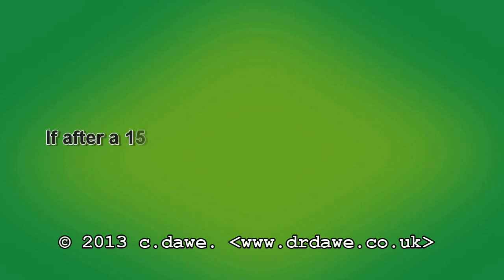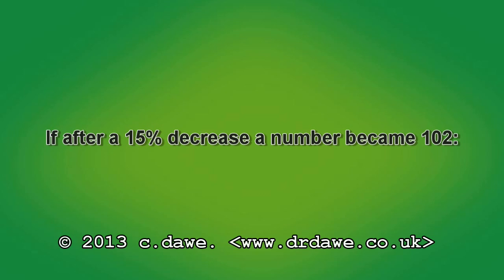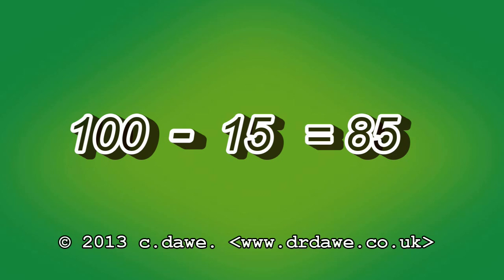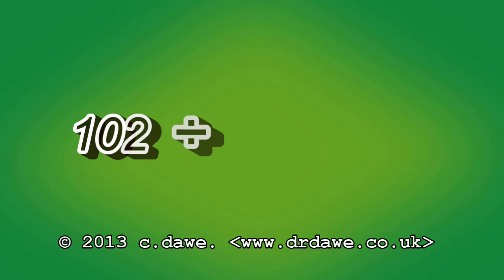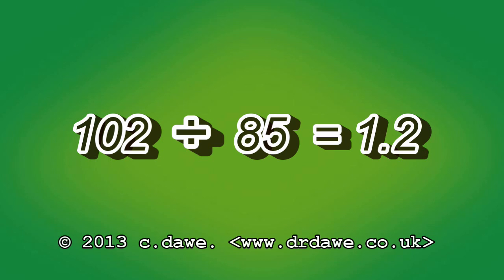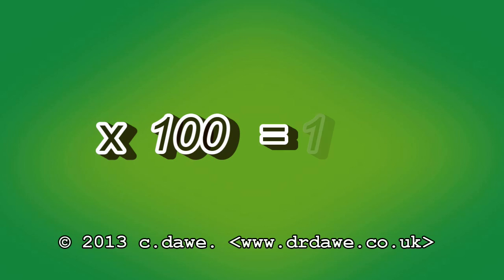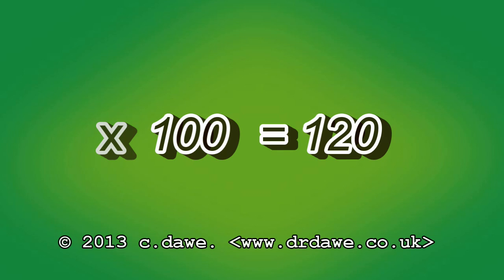If, after a 15% decrease, a number became 102: 100 minus 15 is 85. Divide 102 by 85 to get 1.2. Multiply this by 100 to get 120, which was the original number.